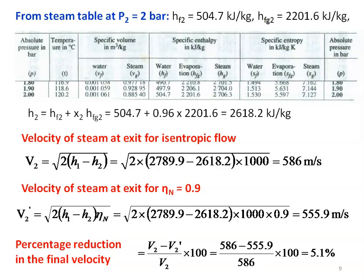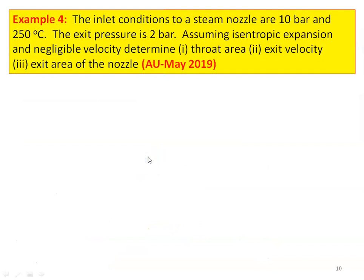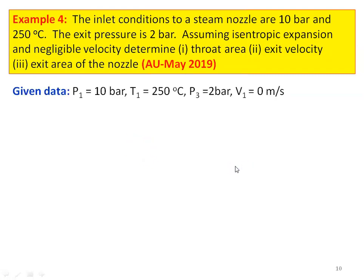Example number 4 from the May 2019 question paper. The inlet conditions to a steam nozzle are 10 bar and 250 degree Celsius. The exit pressure is 2 bar. Assuming isentropic expansion and negligible inlet velocity, determine the throat area, exit velocity, and exit area of the nozzle. Given: P1 equal to 10 bar, T1 equal to 250 degree Celsius, exit pressure P3 equal to 2 bar, V1 initial velocity equal to 0. This is a convergent-divergent nozzle. Inlet condition is 1, exit condition is 3, and throat condition properties are designated by 2.